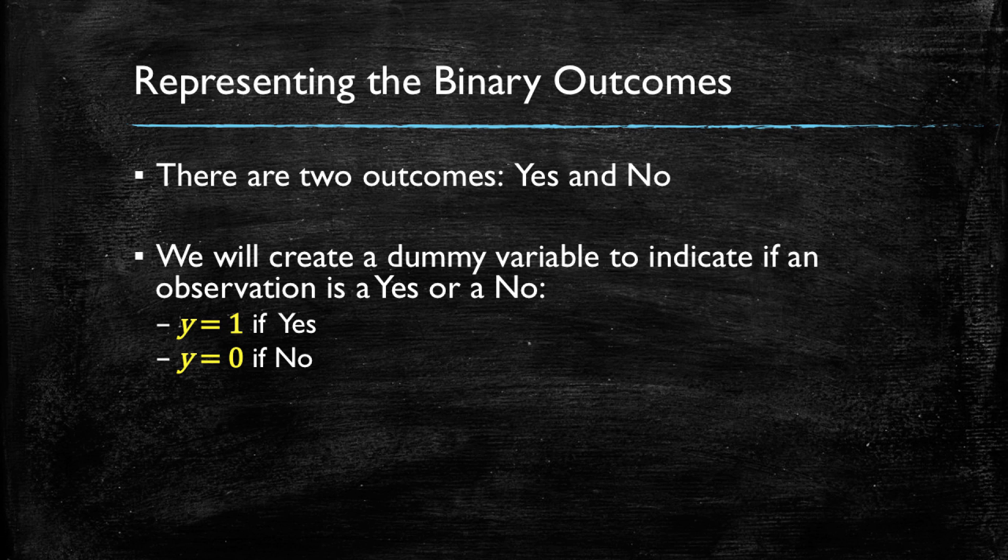Similar to how we did with independent variables, we can create the dummy variable that is going to be equal to 1 if the answer to our question is a yes and a 0 otherwise.